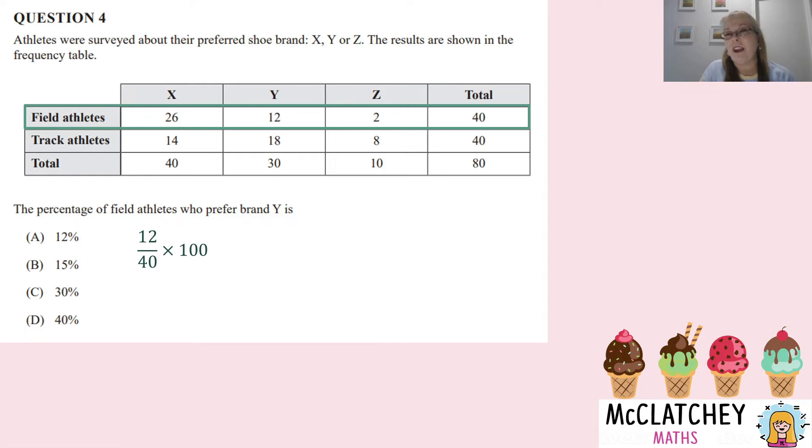So on your calculator, there are fraction buttons, but you can simply do 12 divided by, that's what this symbol, the vinculum means on a fraction, divided by, 12 divided by 40, times it by 100, and that will give you 30%, which means our answer is C.